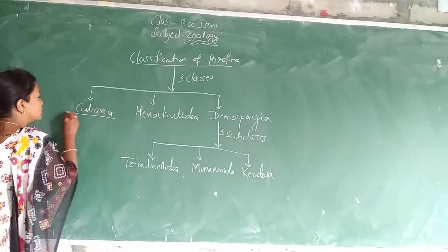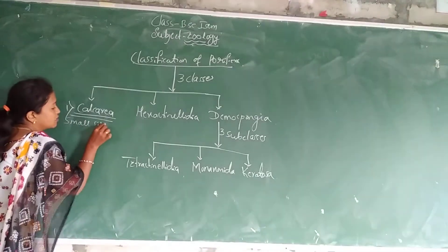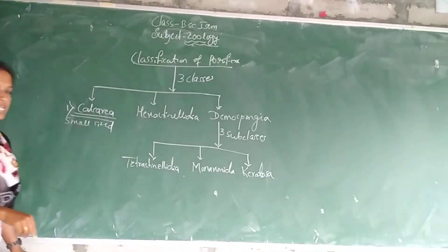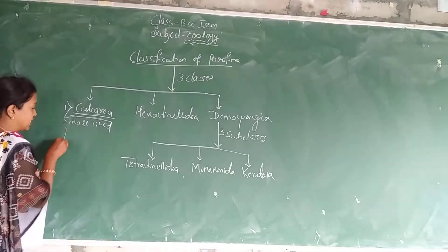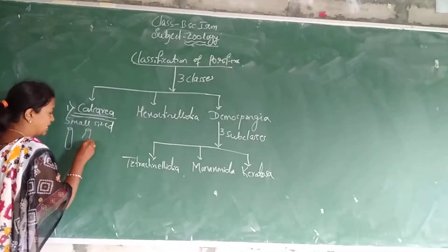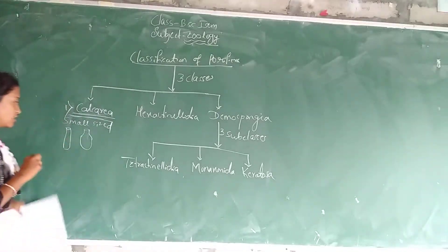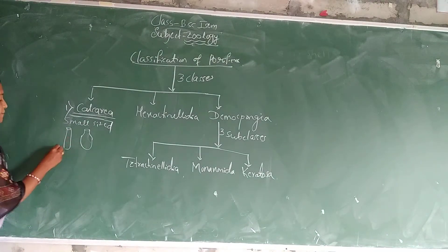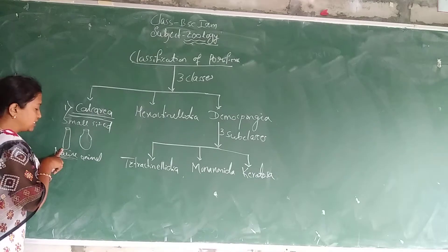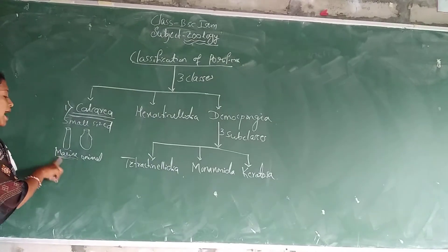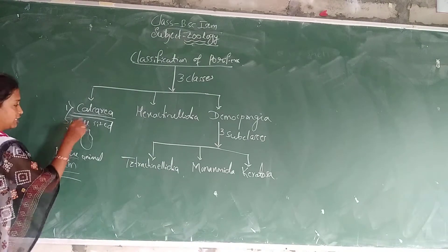First we will discuss Class Calcarea. What are the characteristics of Calcarea? These are small sized animals with calcareous spicules. Body shape is cylindrical or vase-like structure. These are marine animals, below 10 cm height, living in sea water.